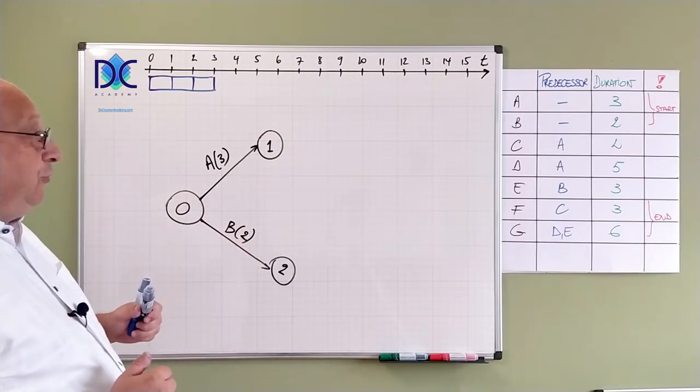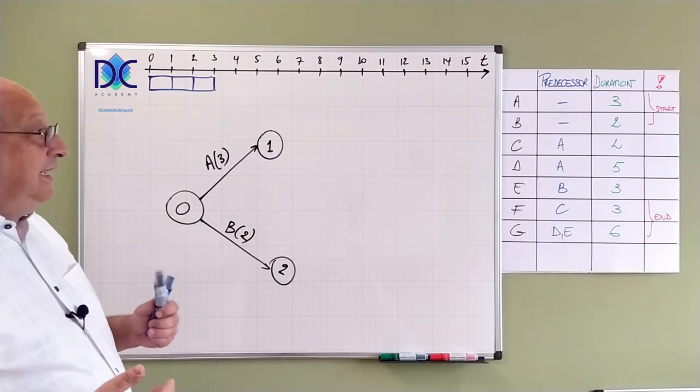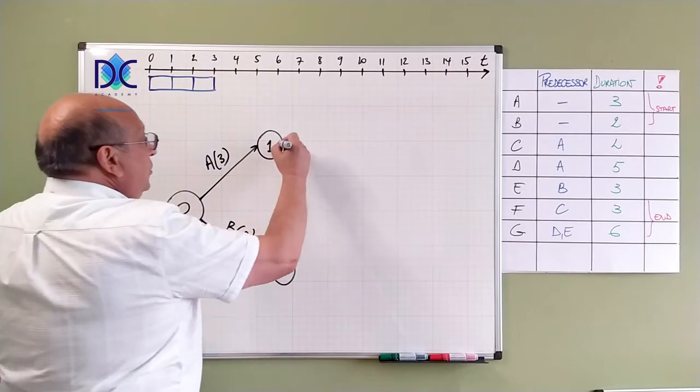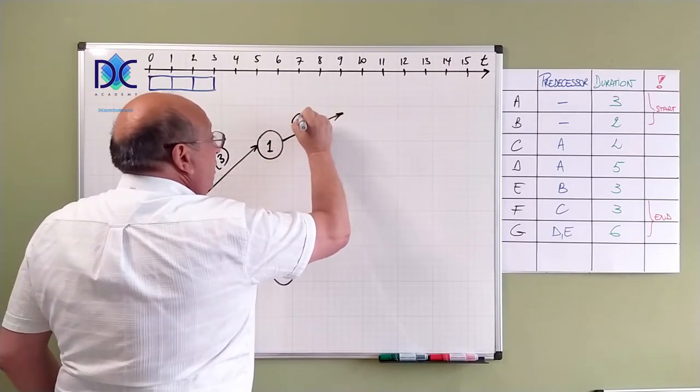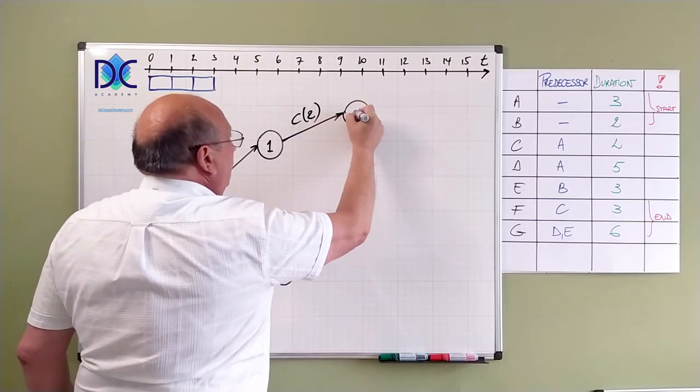Now we have to continue. We go to activity C. C is after A. So I draw C here with a duration of two and I call this node three.